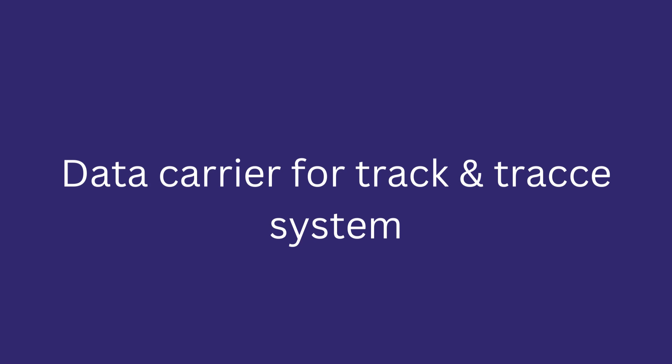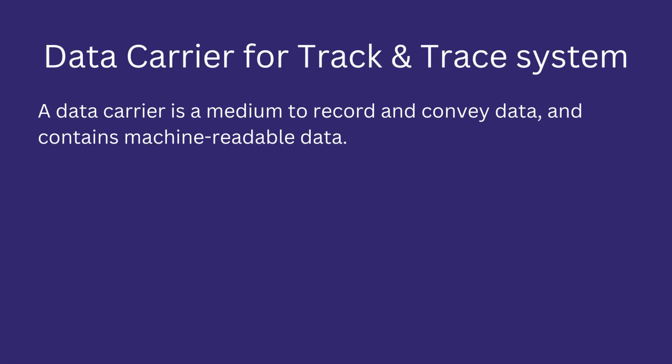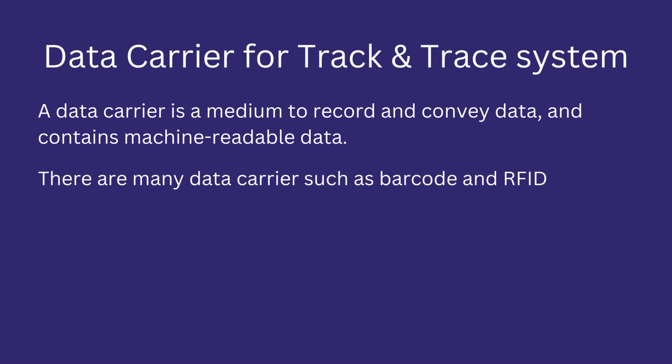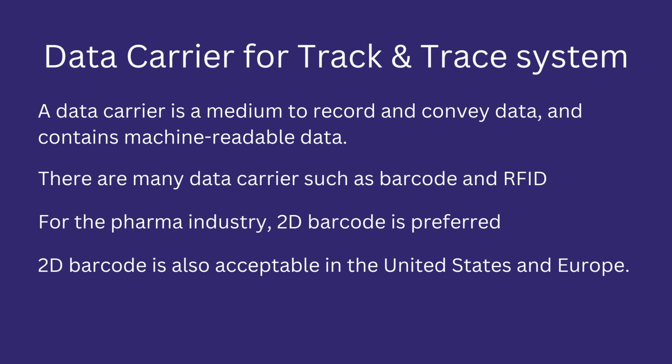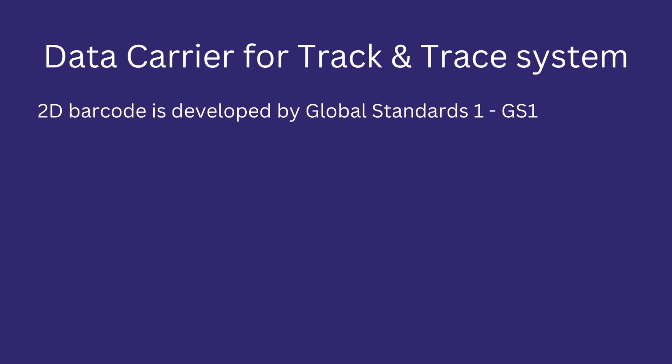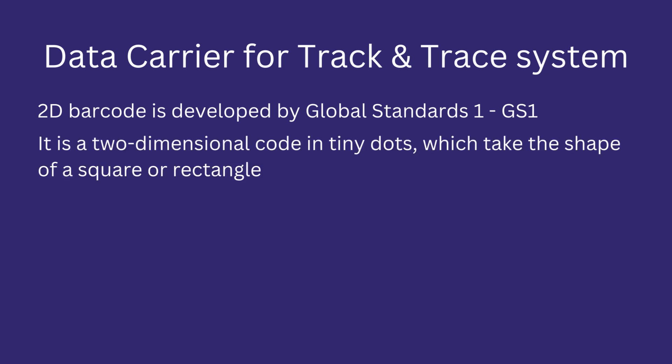Data carrier for track and trace system: A data carrier is a medium used to record data and convey it through a suitable medium. It contains machine readable data, typically through a scanner. Like many industries, there are many data carriers in the pharma industry, such as barcode and RFID. Nowadays, 2D barcode is preferred, which provides greater flexibility when entering and reading data, and is acceptable in both the United States and Europe. The 2D barcode is developed by an international non-profit organization called GS1. The GS1 2D barcode is a two-dimensional code in dotted form, taking the shape of a rectangle or square.